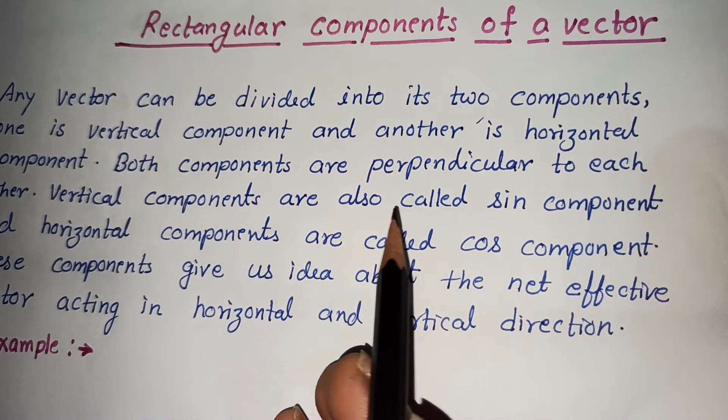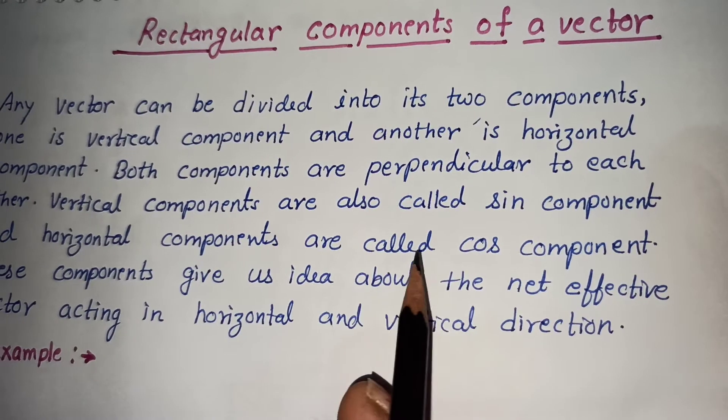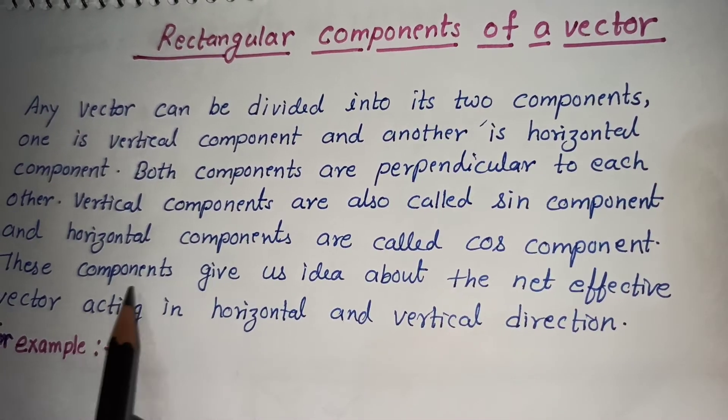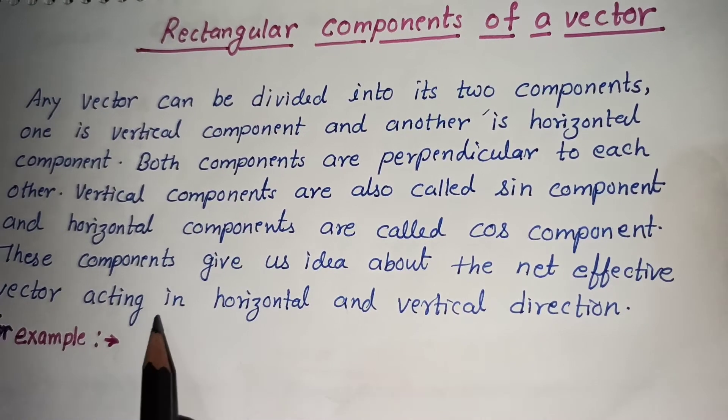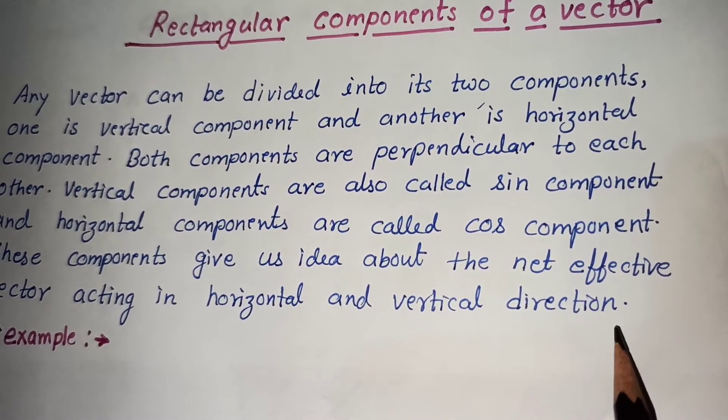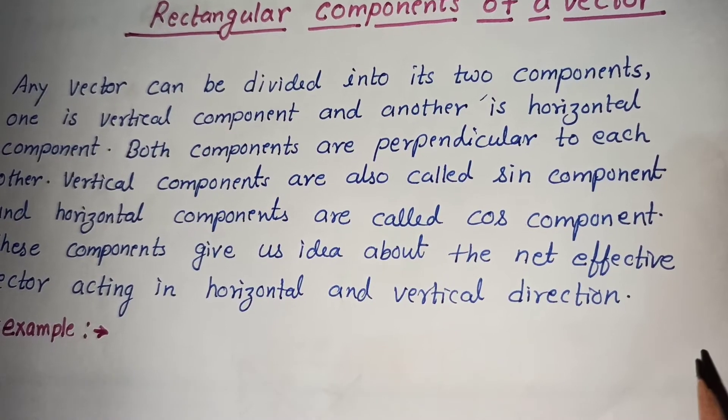Vertical components are also called sine component and horizontal components are also called cos component. These components give us idea about the net effective vector acting in horizontal or vertical direction. Let us see an example.